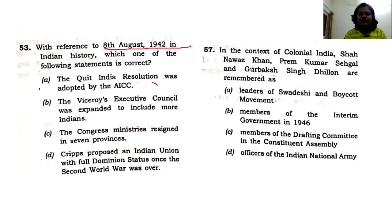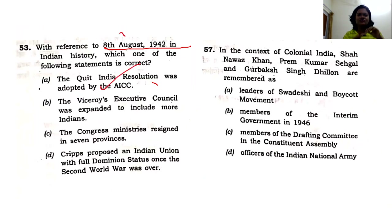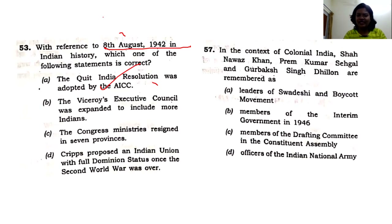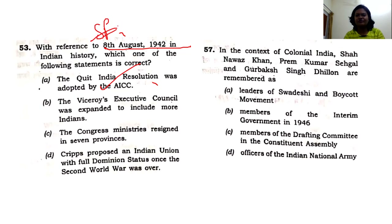8th August 1942 — the moment you see this date, it is nothing but the AICC adopting the Quit India Resolution. There is no other event that should come to mind. Spectrum covers this, and 1942 is the most phenomenal activity in the freedom struggle in August. So the answer is 8th August 1942.